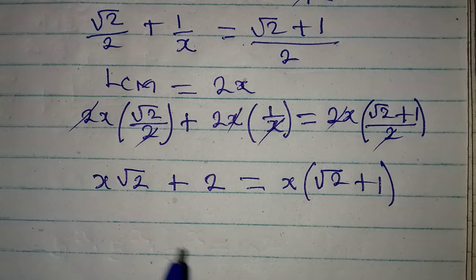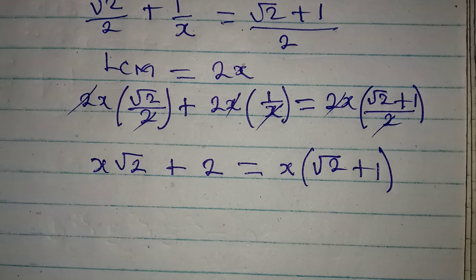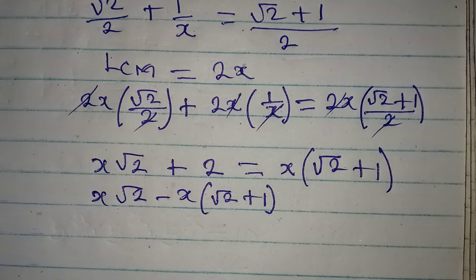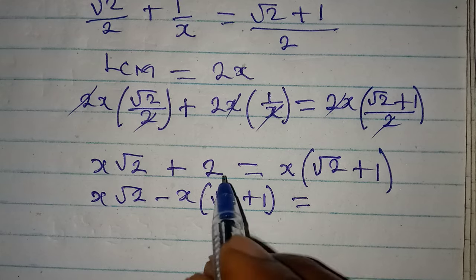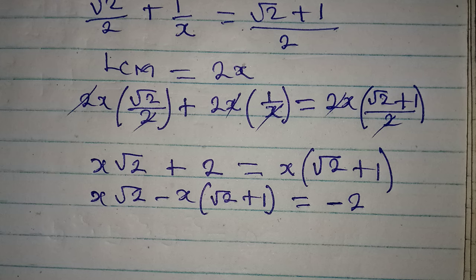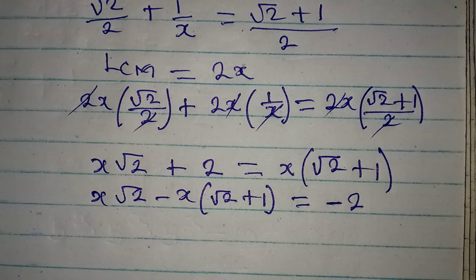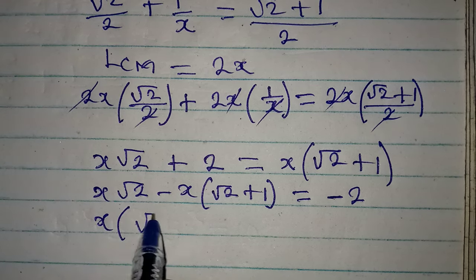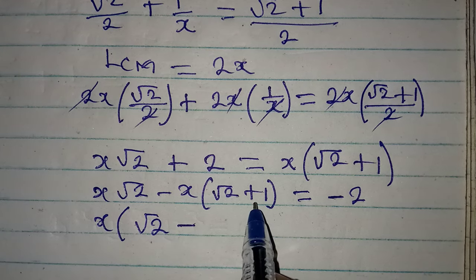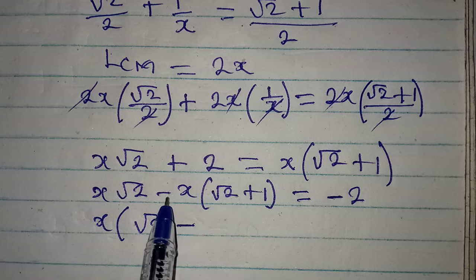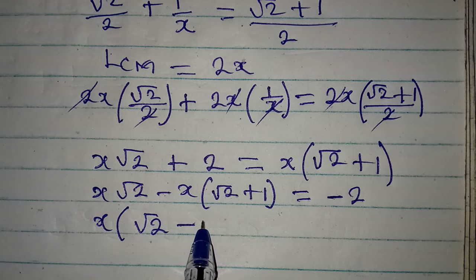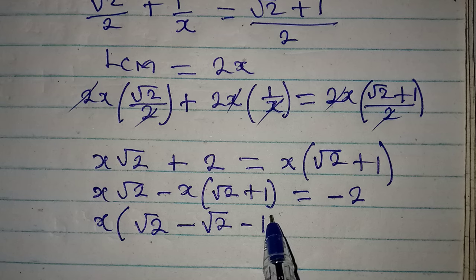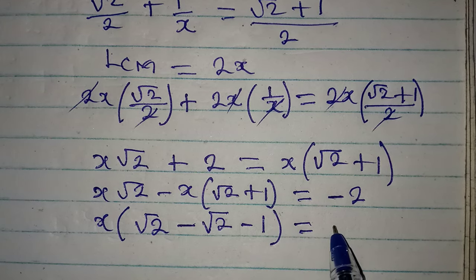Since we have x in two places, let's collect like terms. We have x root 2 minus x times (root 2 plus 1), all equal to negative 2 — because the plus 2 moves to the other side. Factoring out x, we have x times [root 2 minus (root 2 plus 1)]. Expanding the bracket: negative times root 2 gives negative root 2, negative times 1 gives negative 1. So we have x times (root 2 minus root 2 minus 1) equals negative 2.